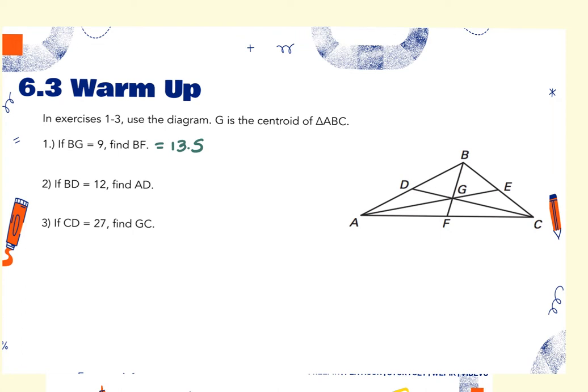The second one says BD is 12, find AD. If D is in the middle of A and B, AD would be 12 also. It's in the middle because you know that's a median, and if it's a median, it hits at the midpoint. So that's 12.